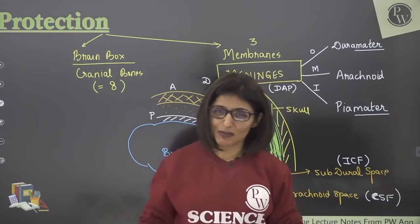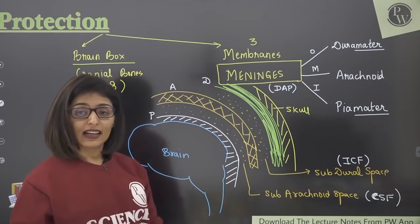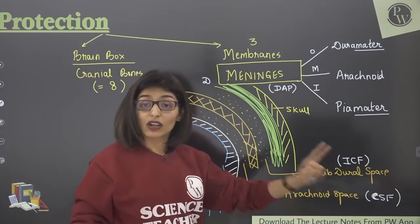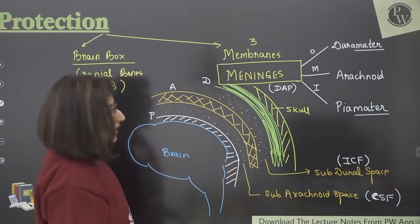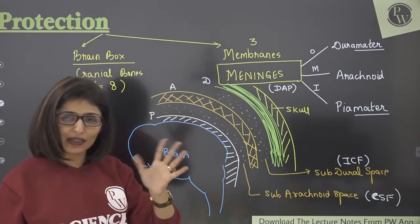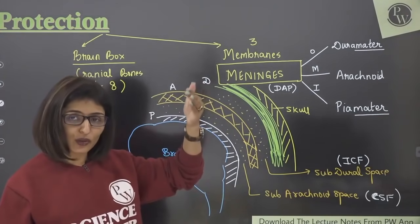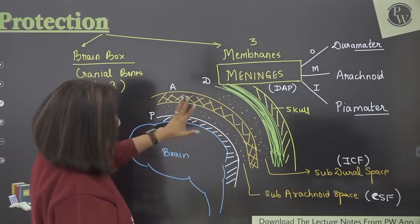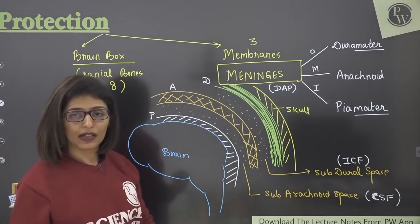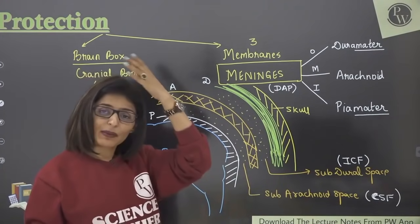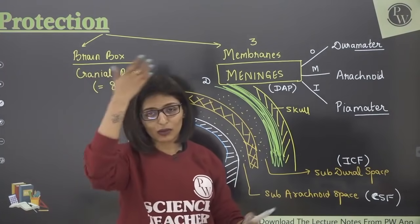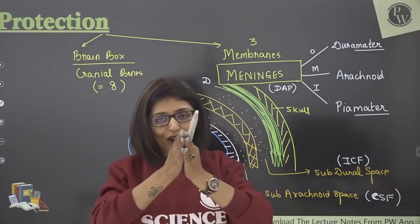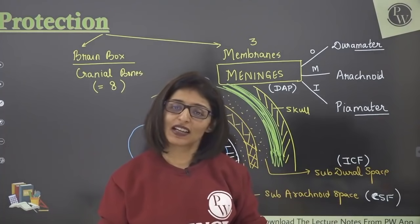Please attend the last lecture if you haven't, because that was the basic foundation for what we are studying now. The cell that makes CSF has both brush border and cilia — let me know its name. Outside to inside, the protection layers are: skull, then DAP (dura, arachnoid, pia), and then the brain. The skull is in contact with dura mater; pia mater is in contact with the brain surface.